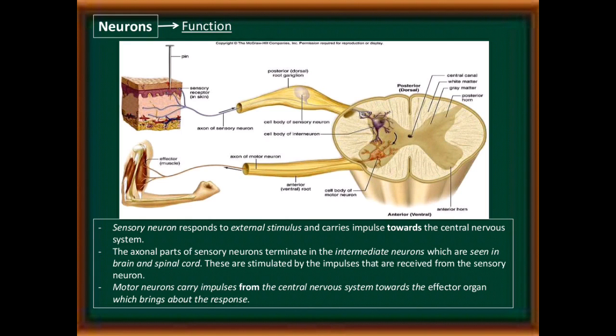The structure of sensory and motor neurons shows how they are present in our body. Sensory nerves carry impulses from various sense organs to the central nervous system, and motor nerves carry information from the brain and central nervous system to the effector organ.